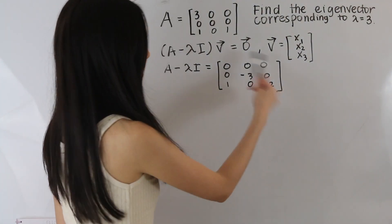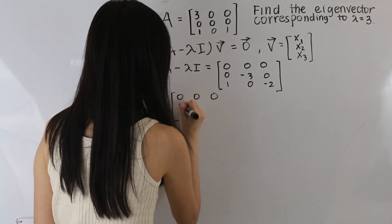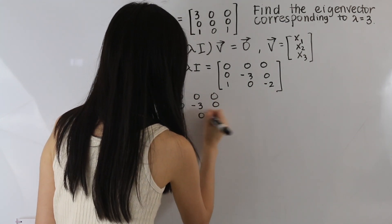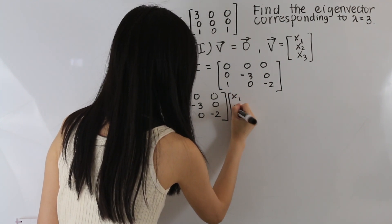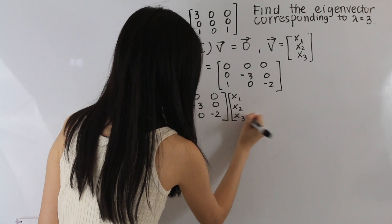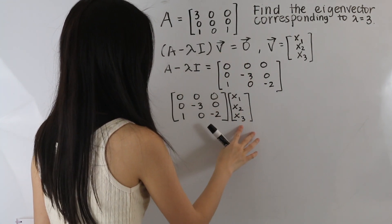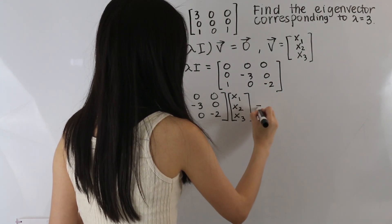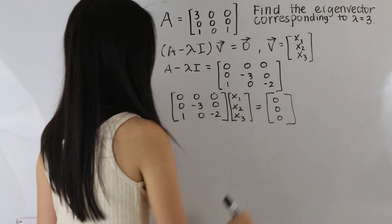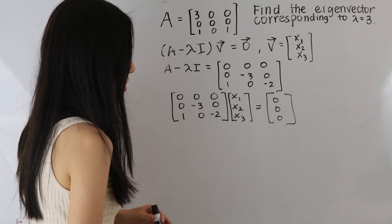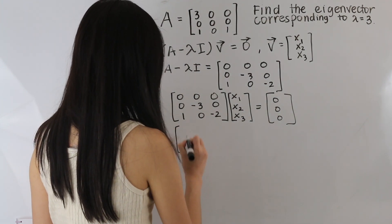So the next step is we're going to plug this in to here. And V is just the eigenvector we're solving for. And then this is equal to the zero vector. And so we can rewrite this in the form of an augmented matrix.